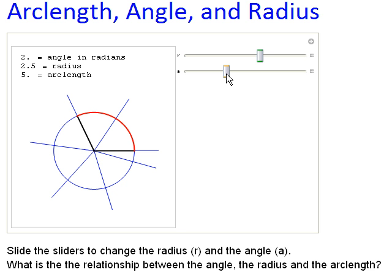Let's change the angle to something else. There's 2.5. The radius is 2.5. The angle is 2.5. 2.5 times 2.5 is 6.25. Make the angle 3. 3 times 2.5 is 7.5.